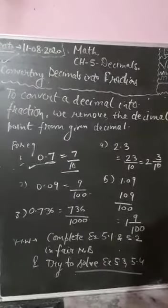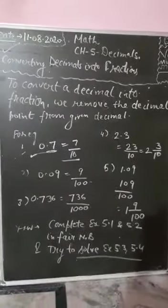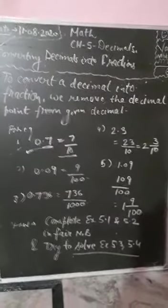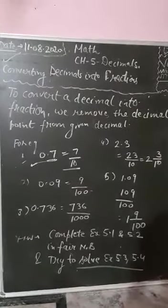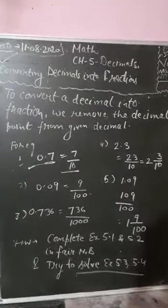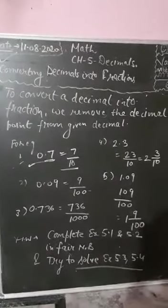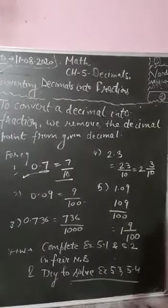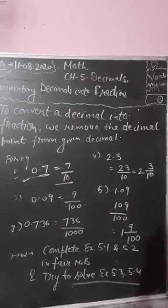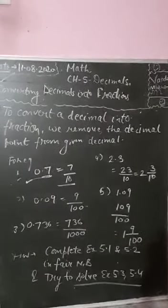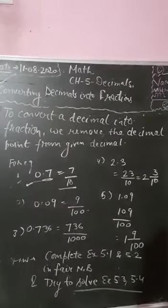For 0.09, 9 is the numerator. Check after the decimal point: two digits are there, so the denominator is 100. The answer is 9 by 100. The third example is 0.736: 736 is the numerator and 1000 is the denominator, because there are three digits after the decimal point. The fourth example is 2.3: you can write 23 as the numerator upon 10, because after the decimal point one digit is there.